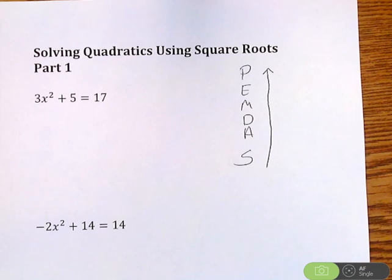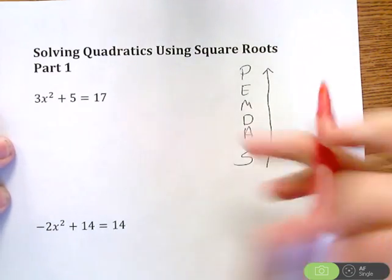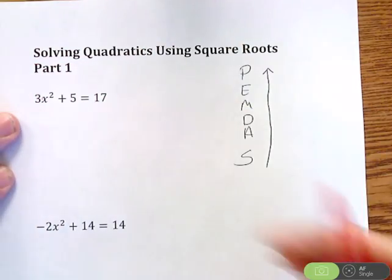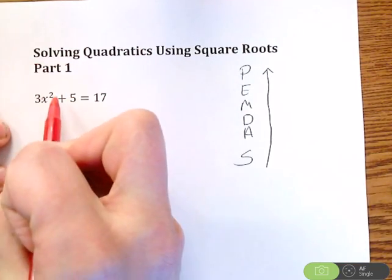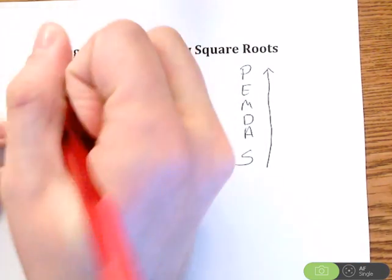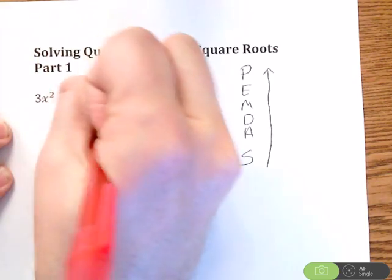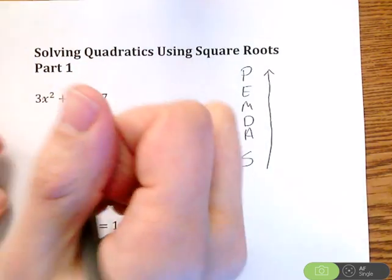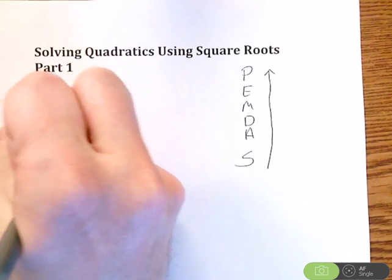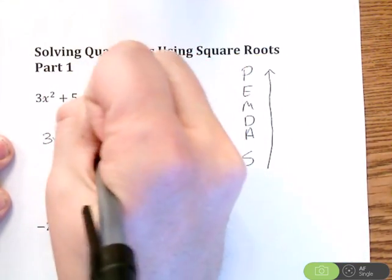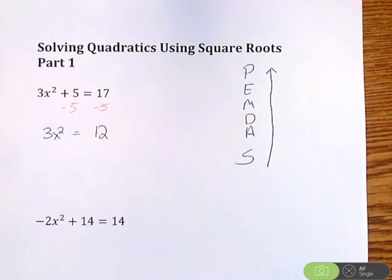So on this first one, we have 3x squared plus 5 equals 17. So if I want to get rid of addition, subtraction, I'm looking at 3 times x squared. So I have a multiplication, I have squared, which is an exponent, plus 5. So I'm going to get rid of this plus 5 first. So I'm going to start by subtracting 5 from both sides. Now when I do that, on the left side, I'm going to be just left with 3x squared. And on the right side, I'm going to have 12. So I got rid of addition, subtraction.